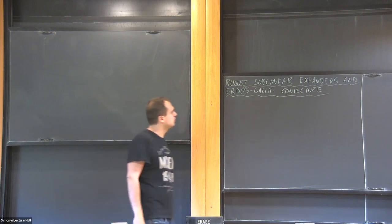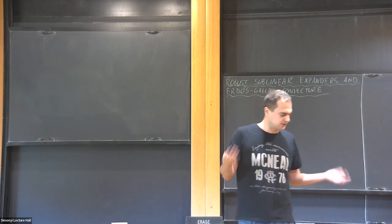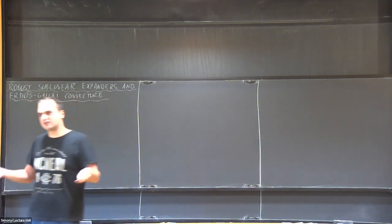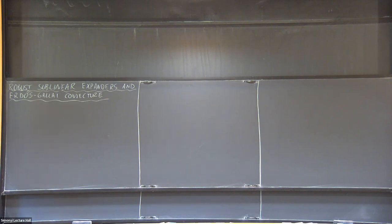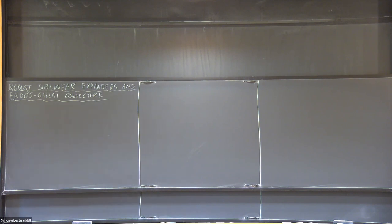The Erdős-Gallai conjecture is a decomposition problem — it's very classical. Decomposition problems in general ask: given some large structure, can you decompose it into as few as possible smaller substructures which have nice properties? Ideally you can understand the substructures and lift this understanding back to the original. That's the guiding line behind decomposition problems and why they are useful in a variety of settings. Erdős-Gallai is a graph decomposition conjecture — we'll be decomposing big graphs.